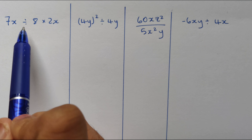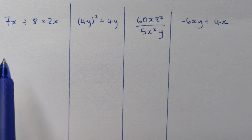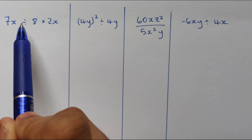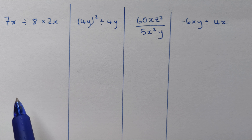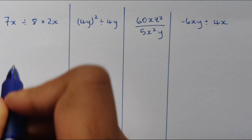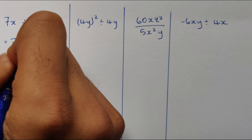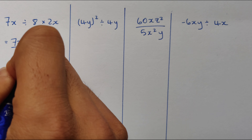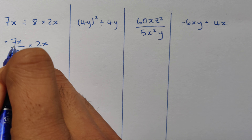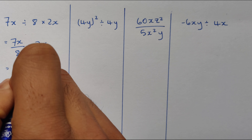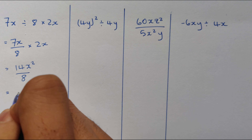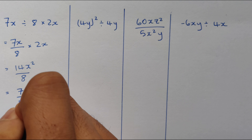Let's look at 7x divided by 8 times 2x. We need to apply BEDMAS, so we do division first. Whenever I see a division sign I like to rewrite it in fraction form, because it's easier to cancel variables if required. So this becomes 7x over 8, multiplied by 2x. Working through it: 7x times 2x equals 14x squared over 8. Simplifying 14 over 8 gives us 7 over 4, so the answer is 7x squared over 4.